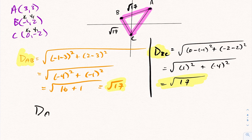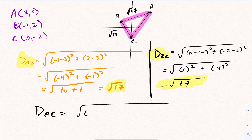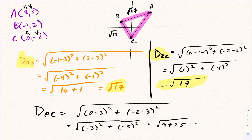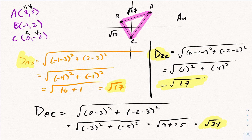Now let's calculate the distance from A to C. Label A as X1, Y1 and C as X2, Y2. The distance AC = √((0−3)² + (−2−3)²) = √((−3)² + (−5)²) = √(9 + 25) = √34. Since AB = BC = √17 but AC = √34, two sides are equal and one is different, so this is an isosceles triangle.